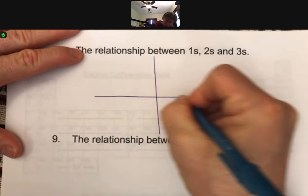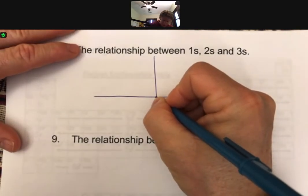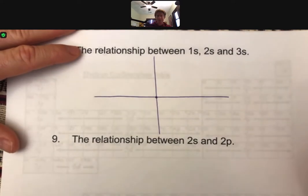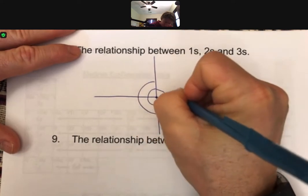So if I'm gonna draw all three of these on the same set of axes, our nucleus is right here, and you just have to draw basically the Bohr picture.